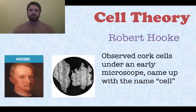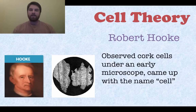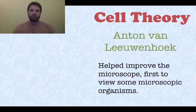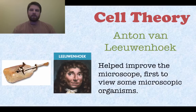The first scientist is Robert Hooke. You see him there on the left, and you see his microscope slide there also. He observed cork cells under an early microscope that he developed and came up with the name 'cell.' He was the first one that actually referred to them by name.